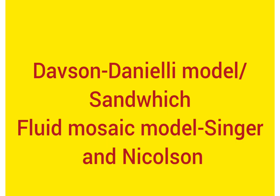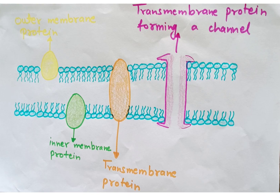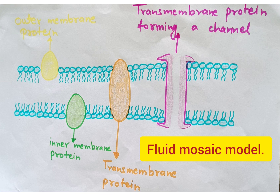It was Davison and Daniel who proposed the model also known as the sandwich model. The other model proposed by Singer and Nicholson was the fluid mosaic model. Let's talk about the details of the fluid mosaic model, which was discovered by Singer and Nicholson in 1972.